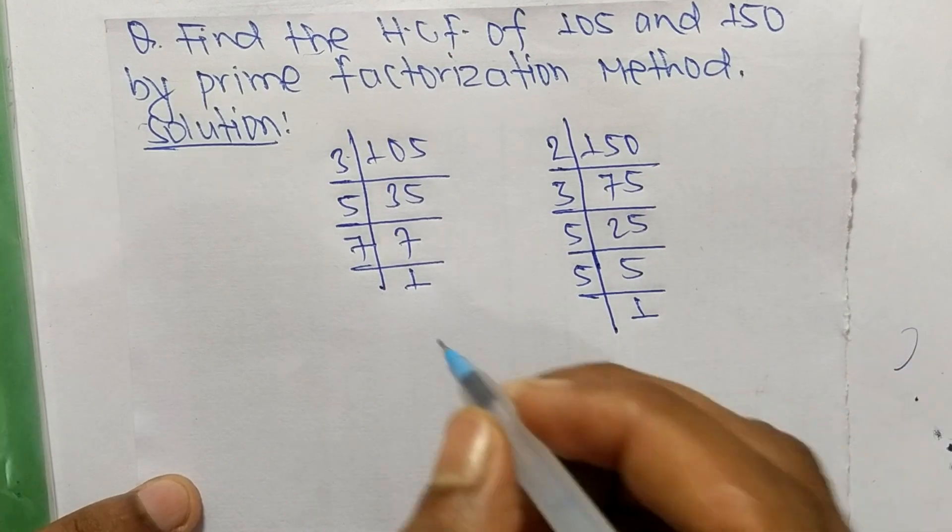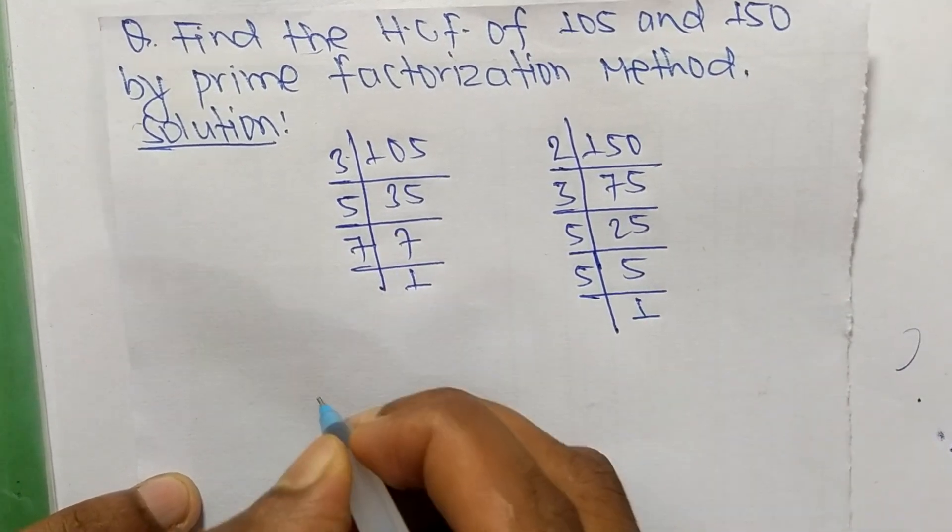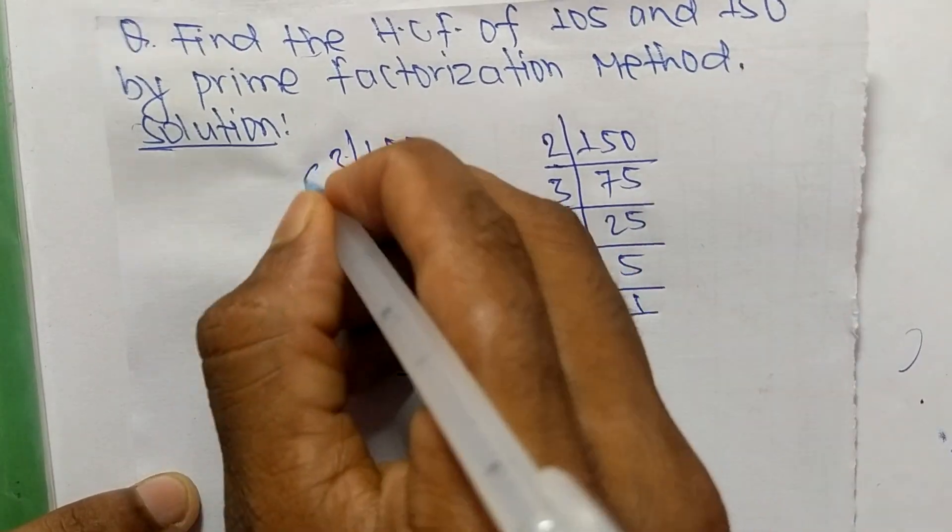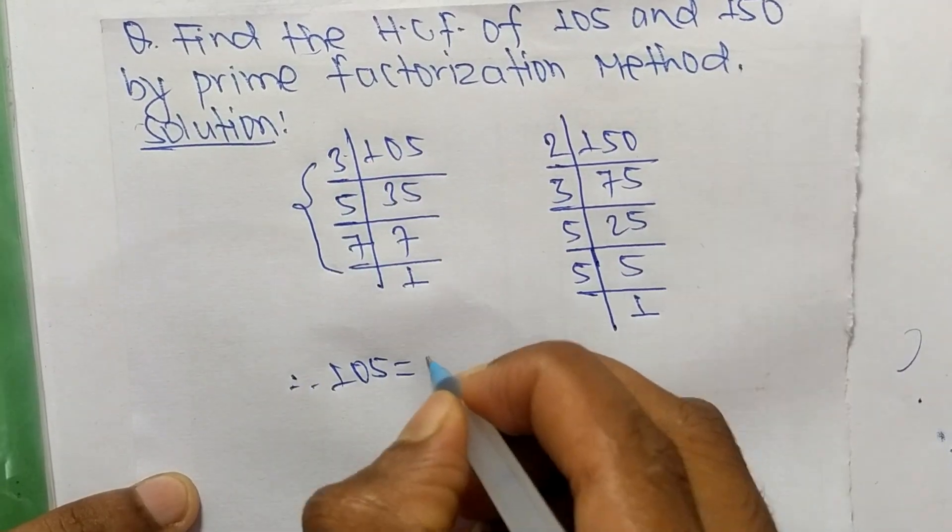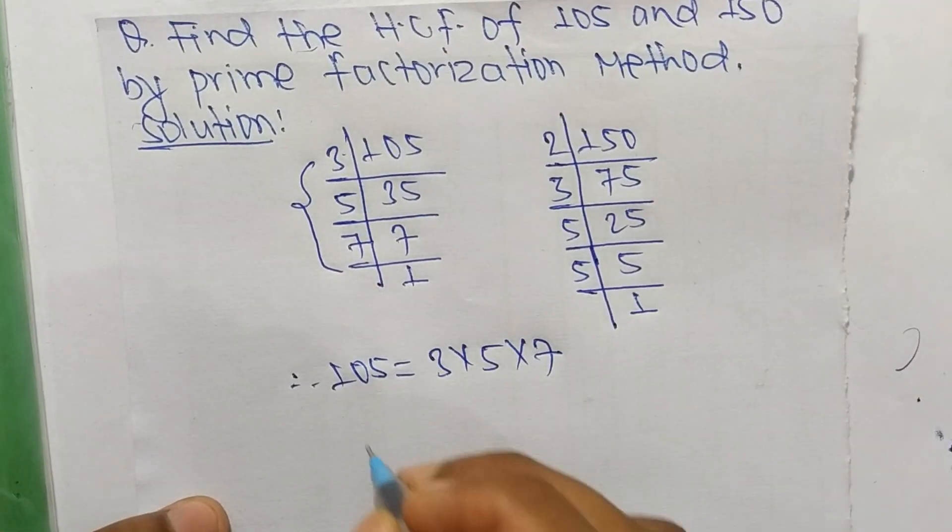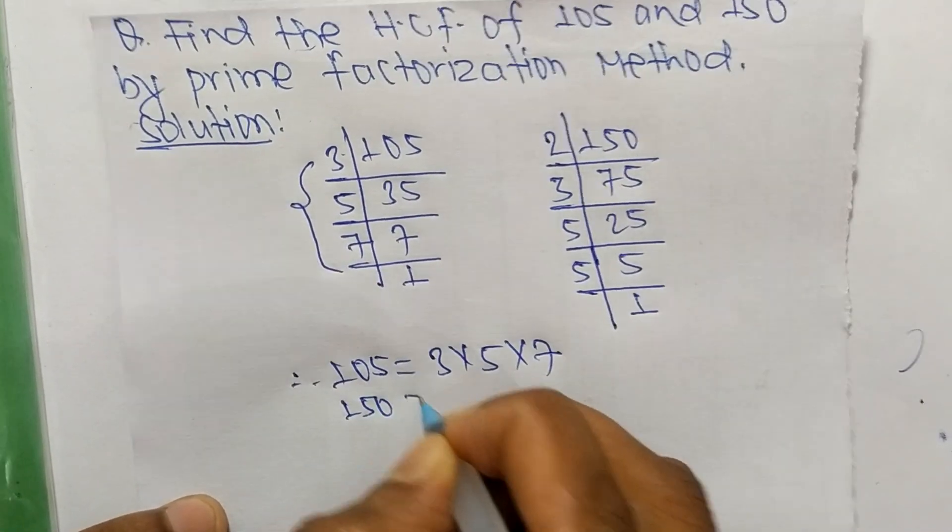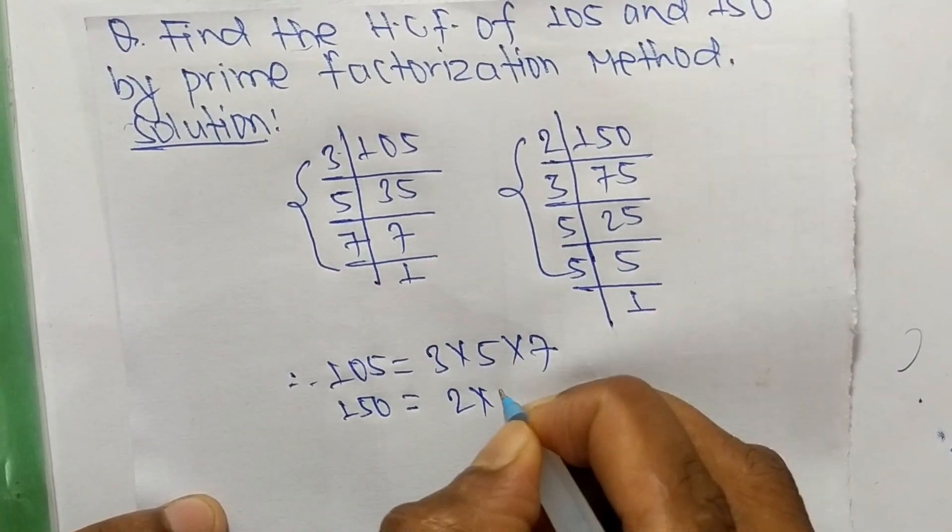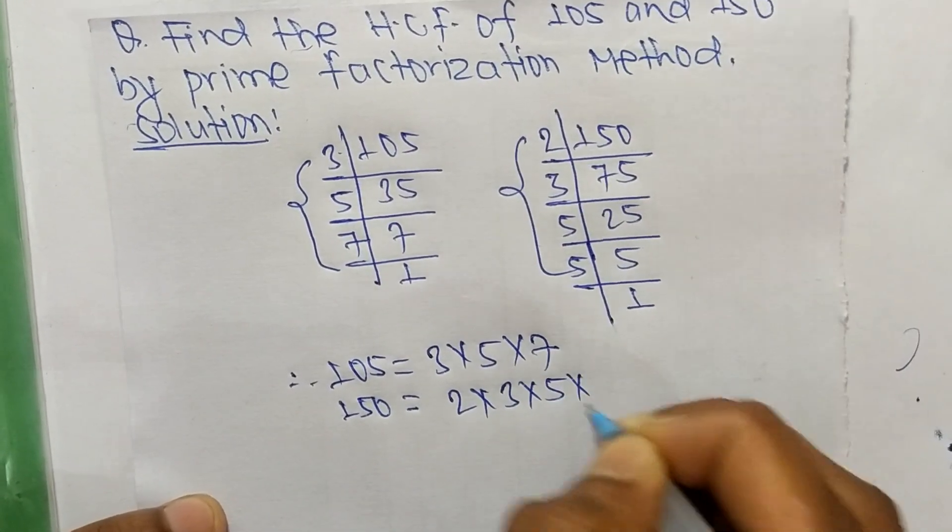From these prime factors, we can write 105 equals 3 times 5 times 7, and 150 equals 2 times 3 times 5 times 5.